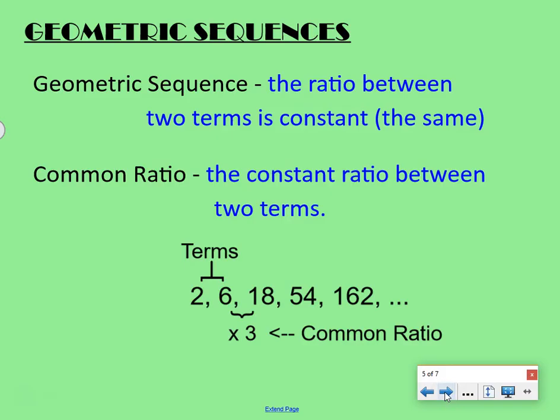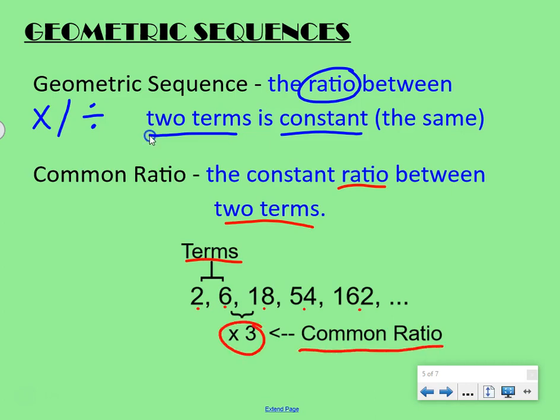Go ahead and flip your paper over, and now we're going to talk about geometric sequences, which are similar, but they have one tiny difference. A geometric sequence is the ratio between the two terms is constant. So now we're looking at a ratio instead of a difference, which means we're going to be using multiplication and division. The common ratio is the constant ratio between the two terms, so whatever you're multiplying or dividing by. So here we have our terms, 2, 6, 18, 54, and 162. And that common ratio is times 3. To get from one term to the next, we're multiplying by 3.